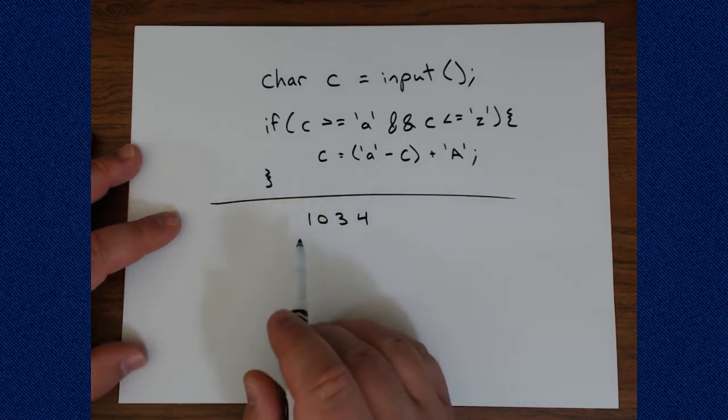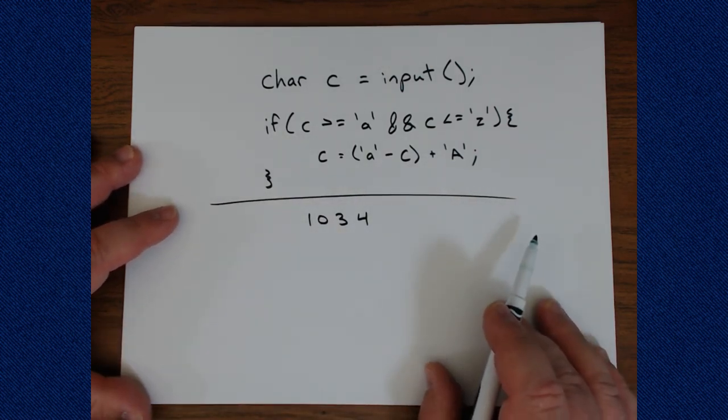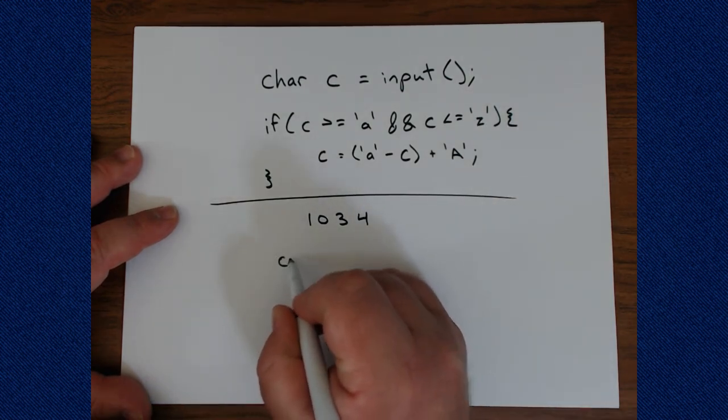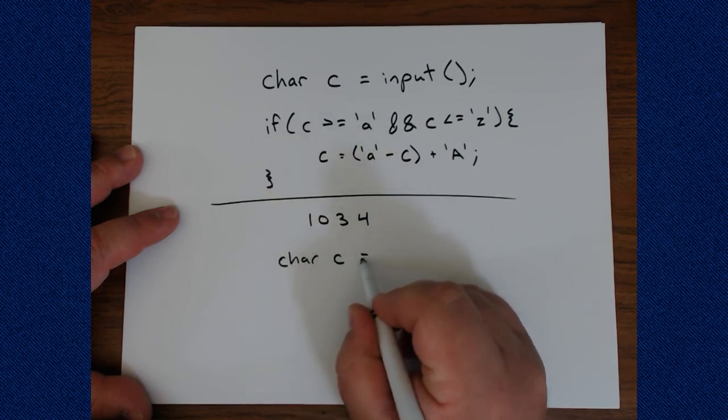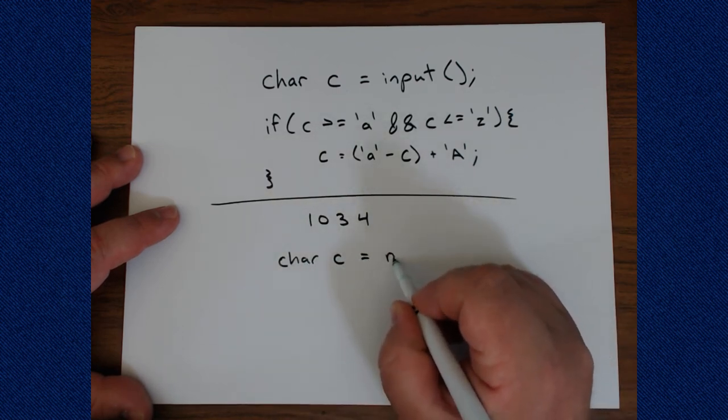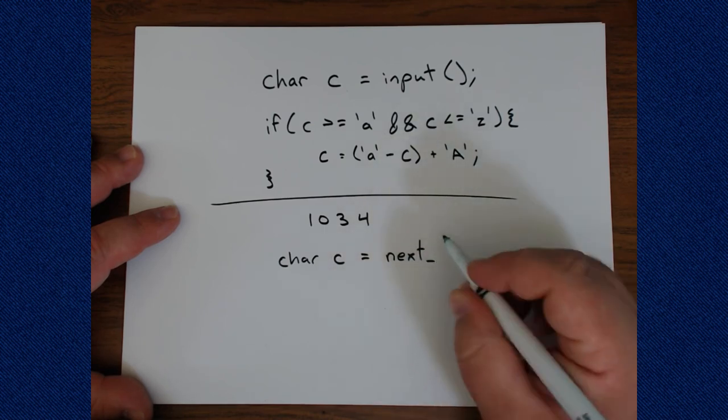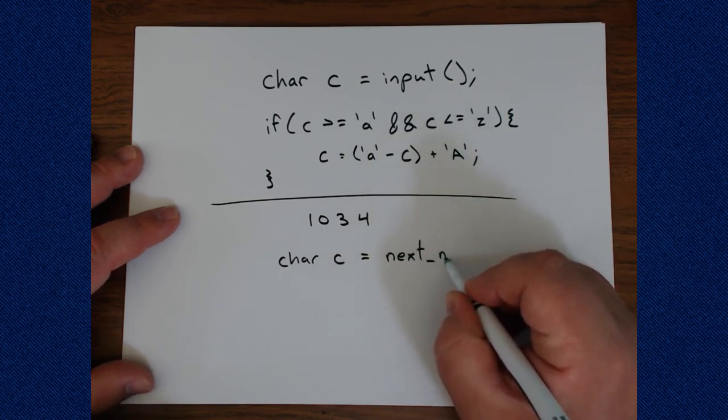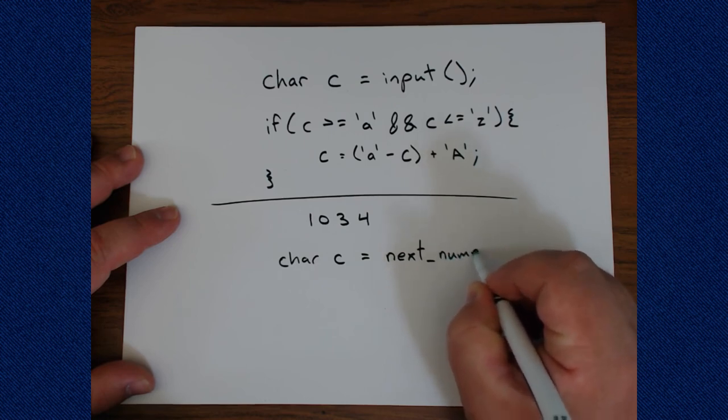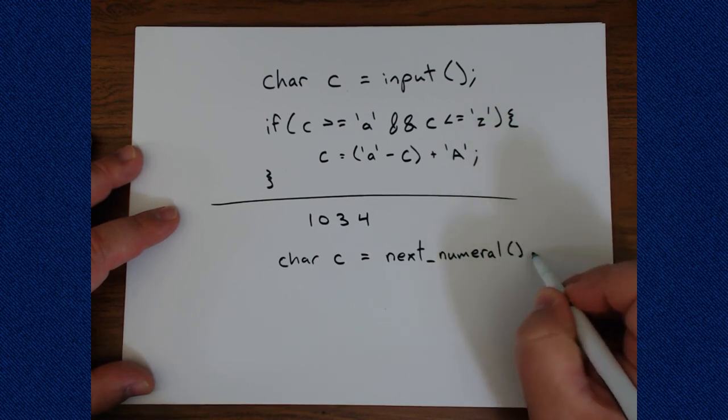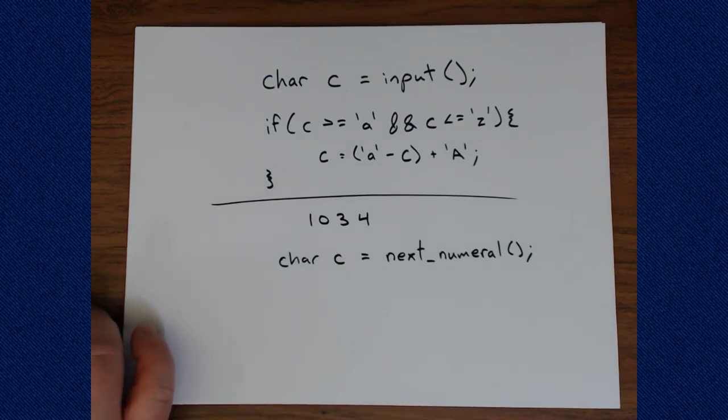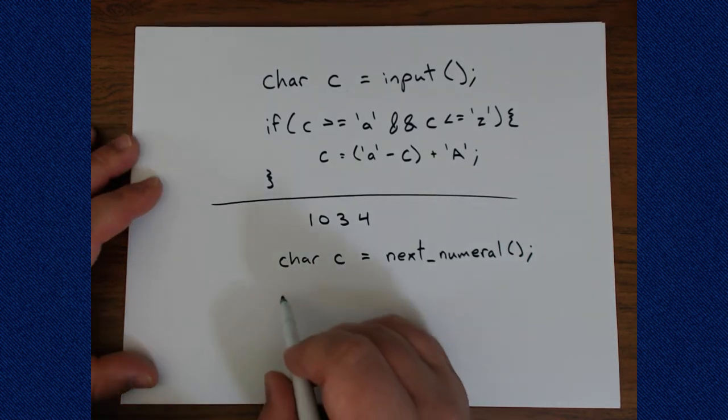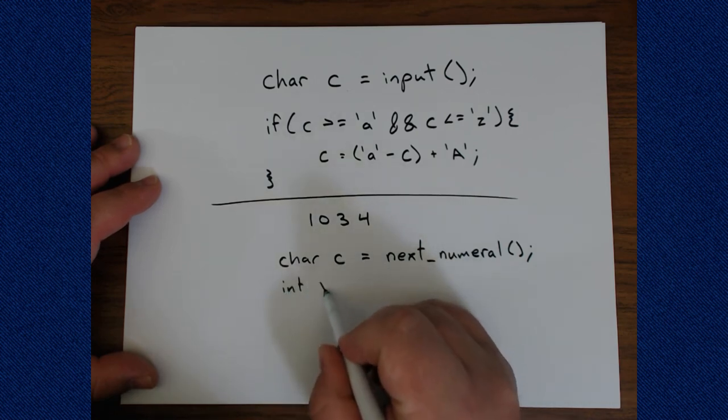So again, let's say we have something like a character C. And it has received the next numeral from some input device. However this thing comes. It gets the next numeral. In this case, that will be the character one. What we need to do is find the value one. So that might be stored in some integer. I'll call it value.